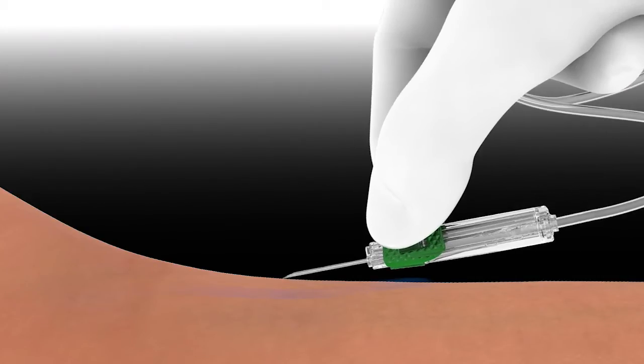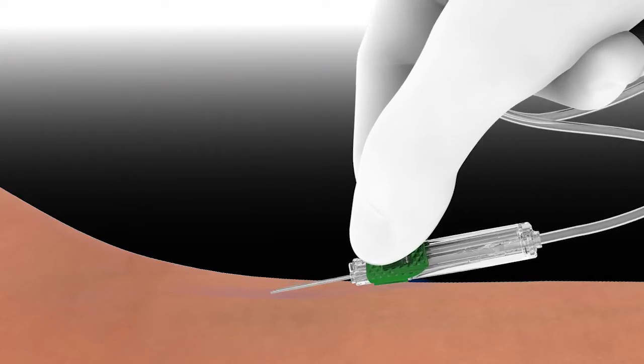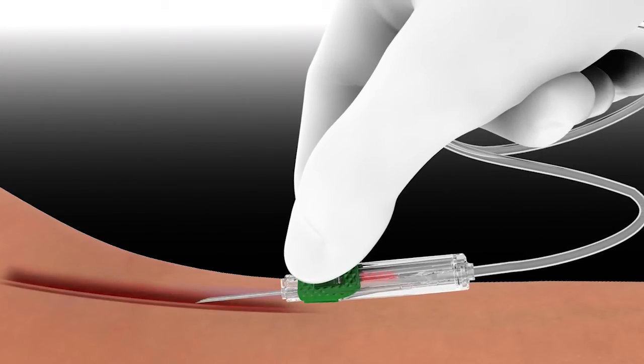Upon insertion, a flashback of blood is quickly visible through the transparent hub, confirming that the needle tip is inside the vein.